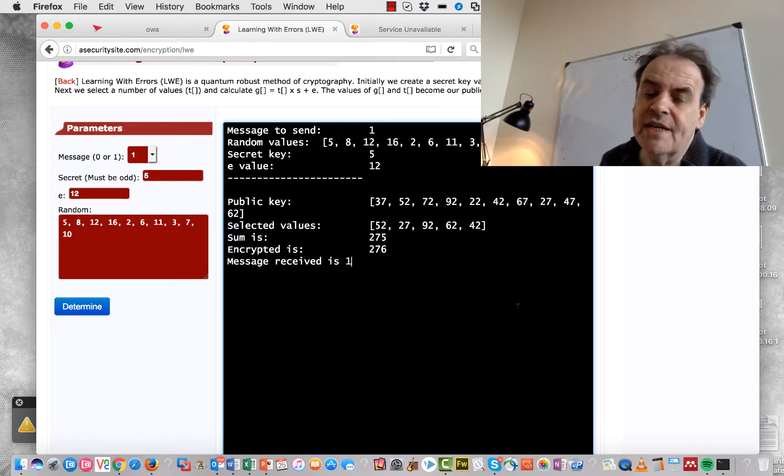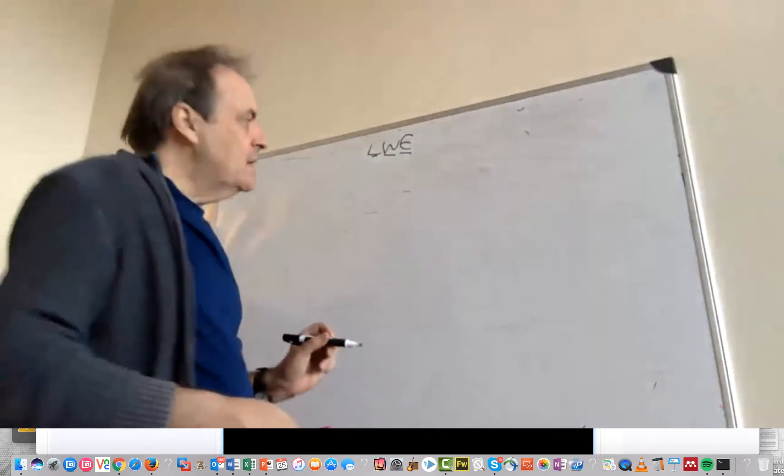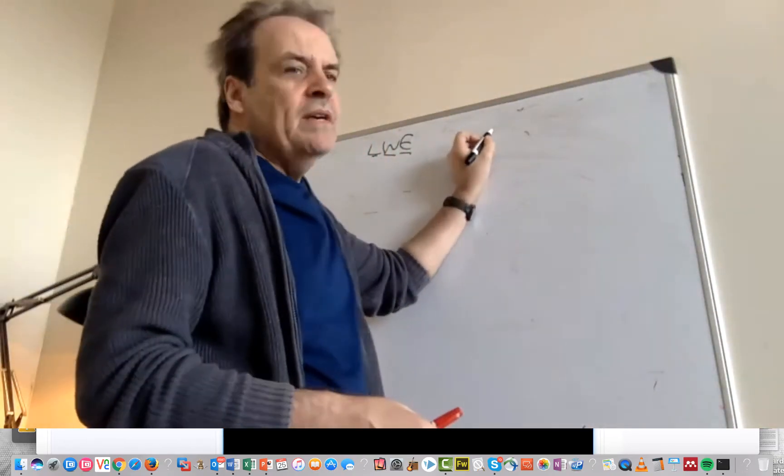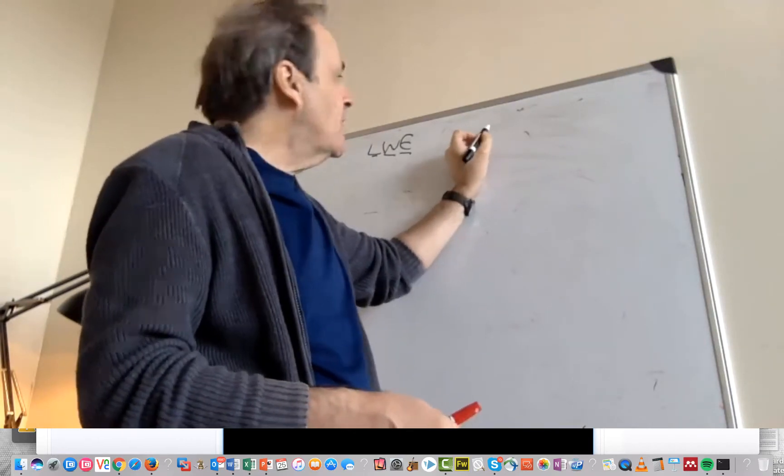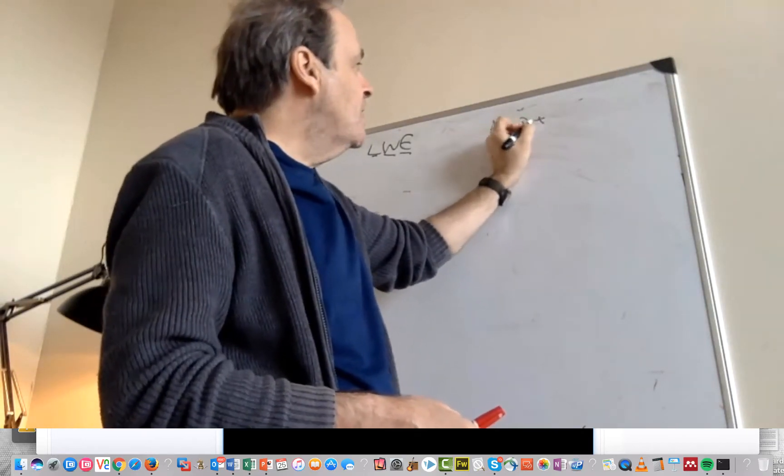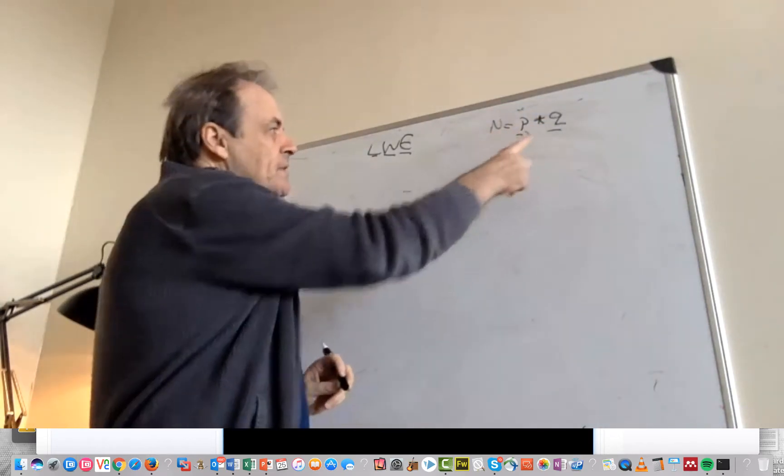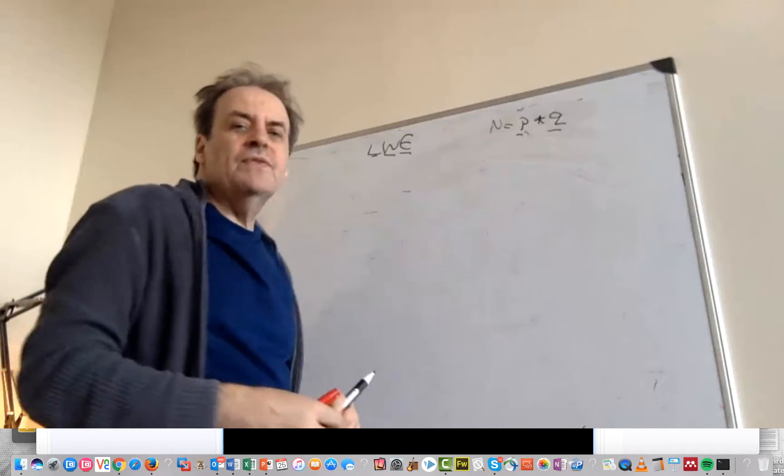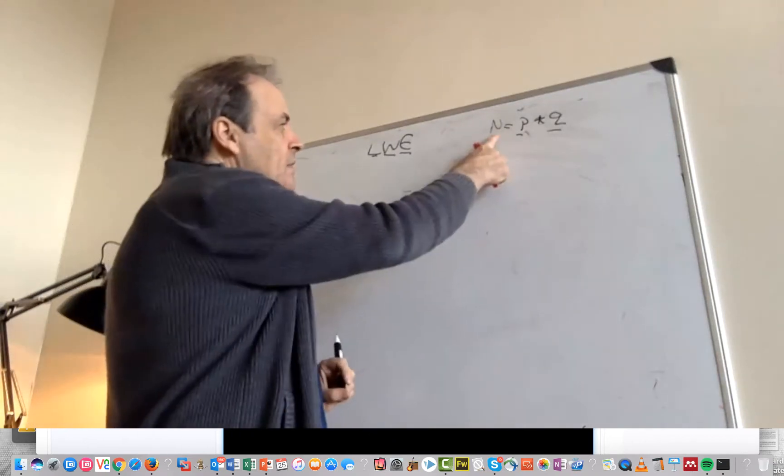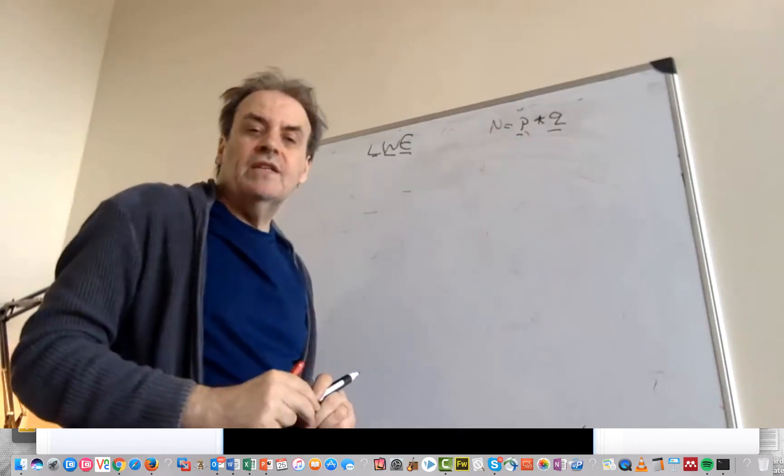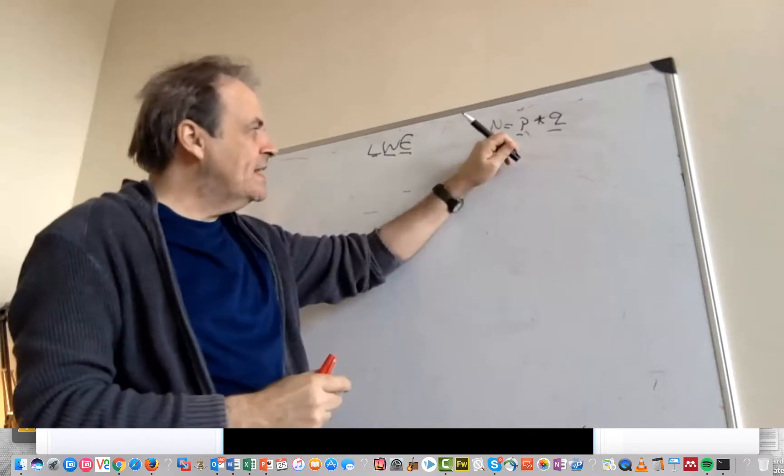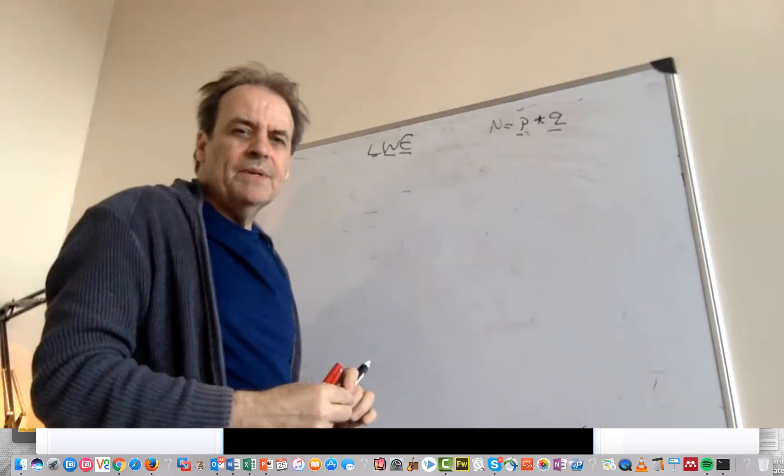So the problem that we have with discrete logarithms such as with RSA is that our keys are based on the multiplication of two prime numbers and the difficulty is that computers find it difficult to actually factorize the value of n into the original prime numbers. If that is possible then the RSA method has been cracked.